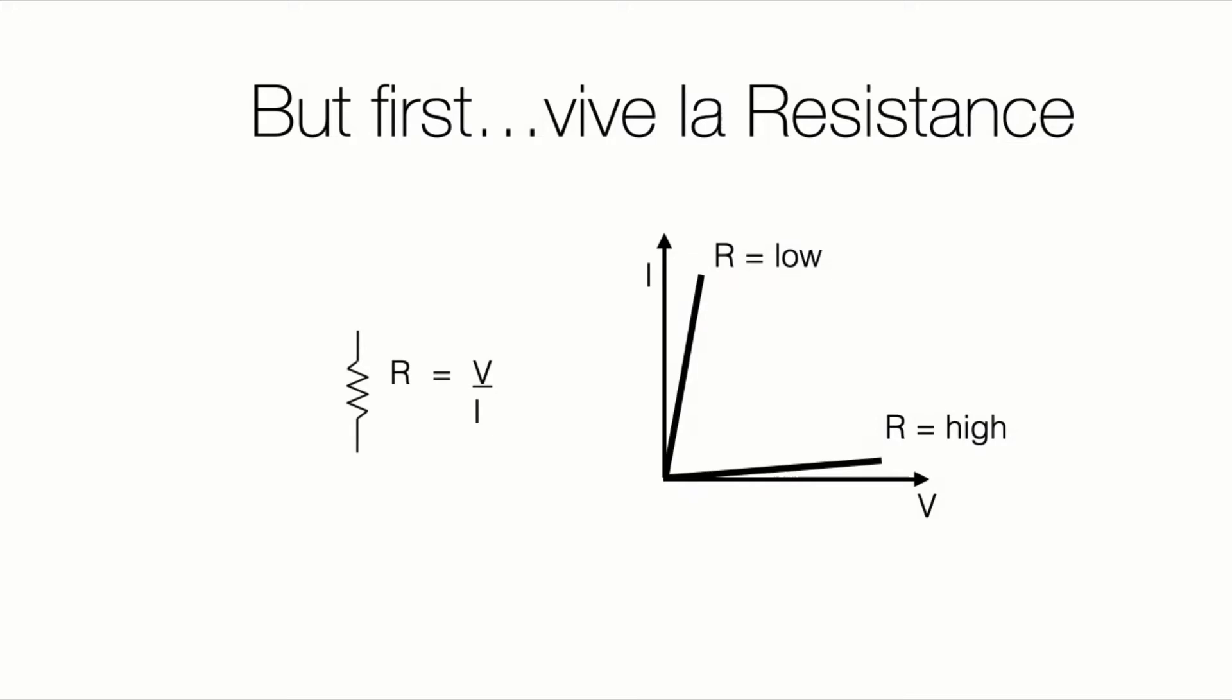But first, vive la résistance. We're going to talk about resistance for a moment because this is going to be needed for me to show you what I want to show you. So if we have a resistor, using Ohm's law, R equals V over I, it's one of its many forms. So if I double the voltage, I have to double the current. If I halve the voltage, I have to halve the current. And these lines represent, in a sense, an IV curve for a resistor.